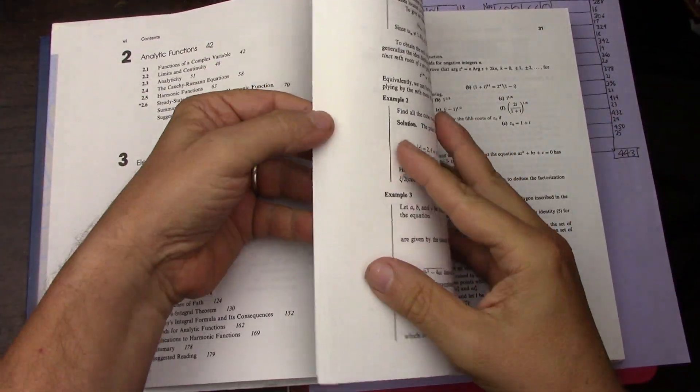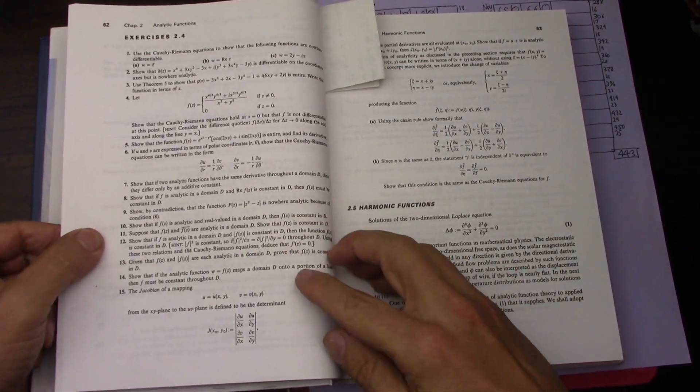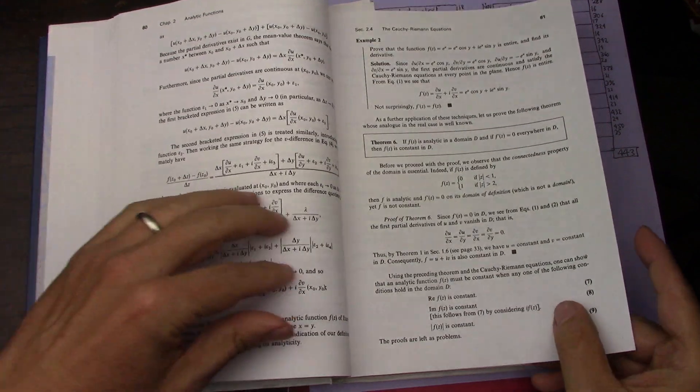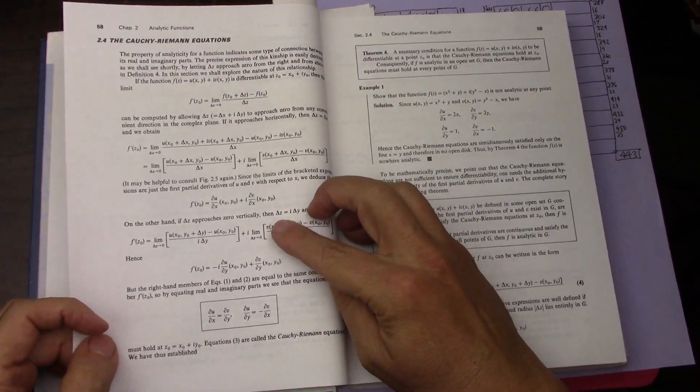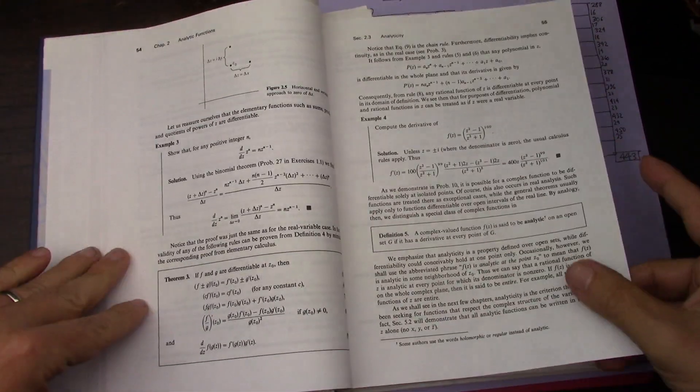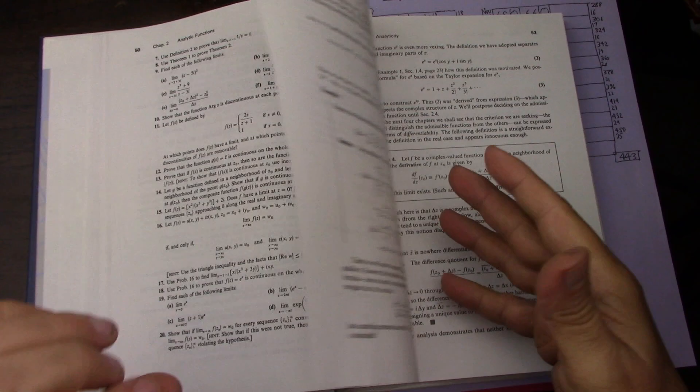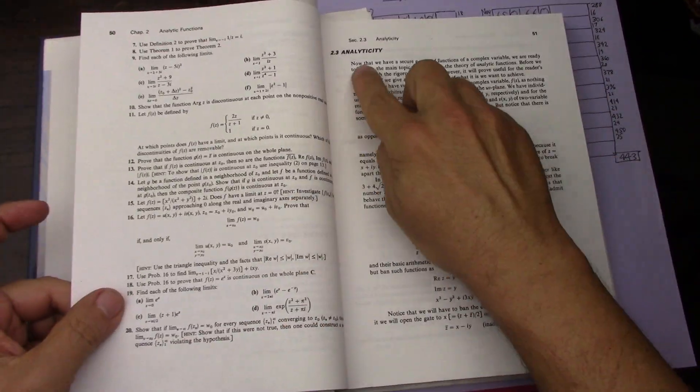So far, I have read all the way into section 2.4. Yeah, I finished section 2.4. So I've already gone over the Cauchy-Riemann equations. So some differentiation in the complex plane. Very interesting, as always.